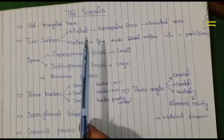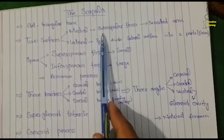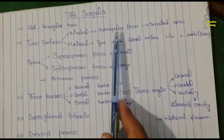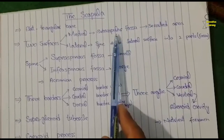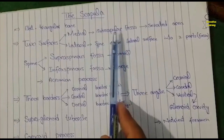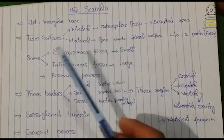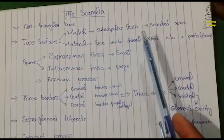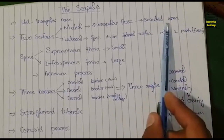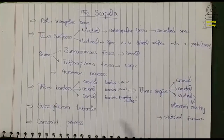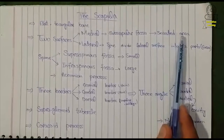On the medial surface, there is a shallow depression called the subscapular fossa. The subscapular fossa is rough in shape and is a site for the attachment of the subscapularis muscle. On the distal edges of the medial surface, there is a highly rough area called the serrated area.